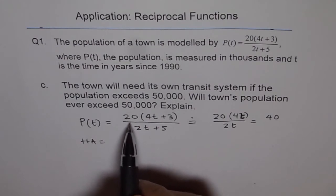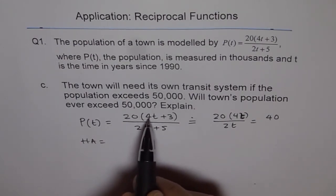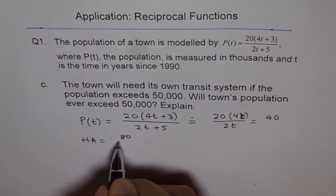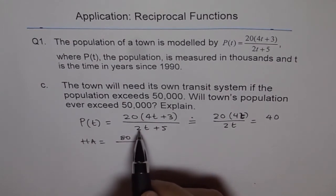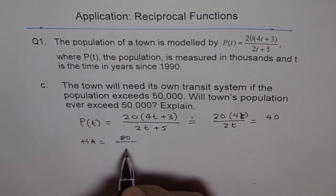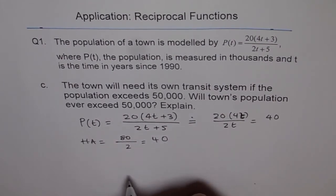Now, the leading coefficient here is 20 times 4, which is 80. And for the leading coefficient of denominator, it is 2. And we get 40 as our answer, right?